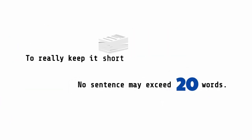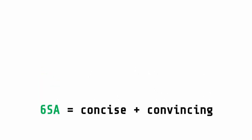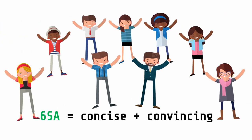This limit forces you to establish clarity in each sentence. As a result, your six sentence argument will be concise and convincing. In order to write good 6SAs, practice writing and editing your six sentence argument, and embrace peer feedback to create compelling arguments.